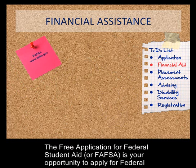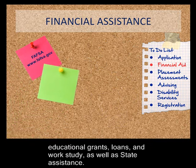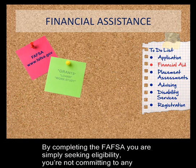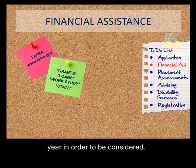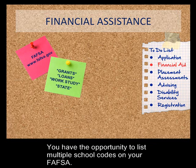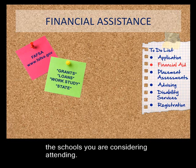The Free Application for Federal Student Aid, or FAFSA, is your opportunity to apply for federal educational grants, loans, and work study, as well as state assistance. By completing the FAFSA, you are simply seeking eligibility — you are not committing to any loans. You should complete the FAFSA as soon after January 1st as possible. You must reapply each year in order to be considered. You have the opportunity to list multiple school codes on your FAFSA.